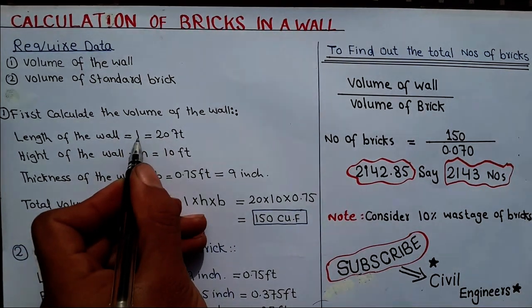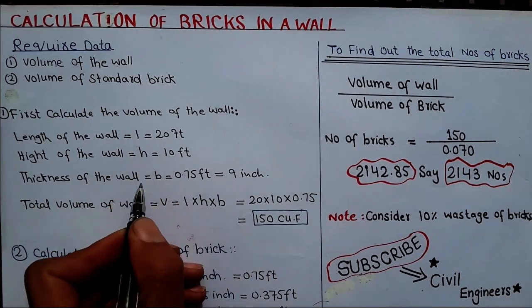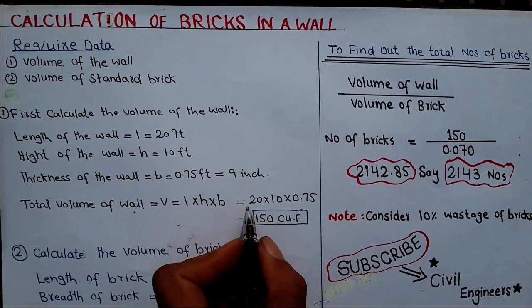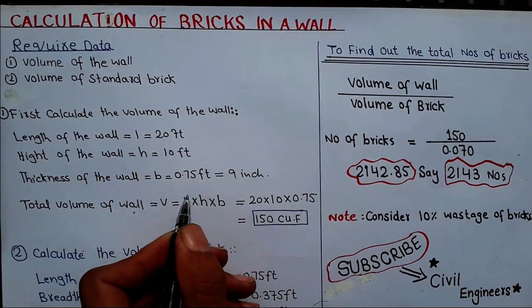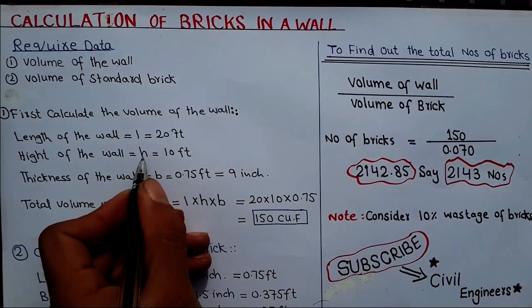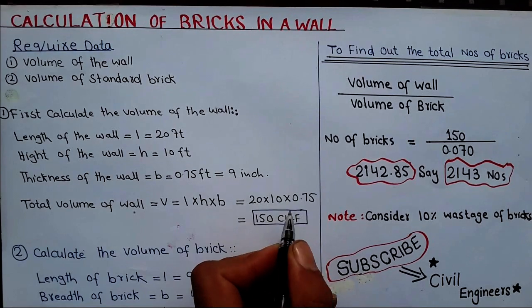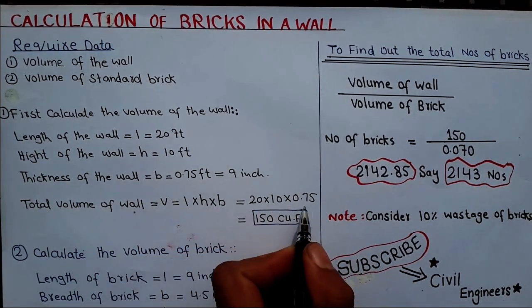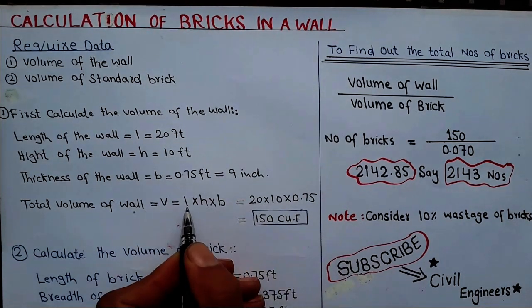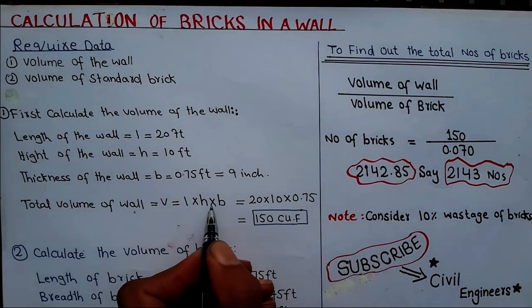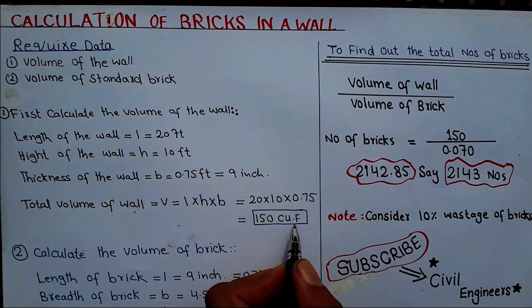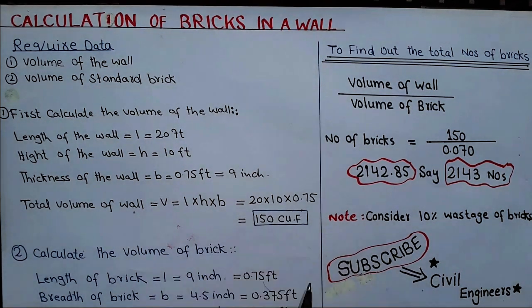V = L × H × B = 20 × 10 × 0.75 feet. When you multiply these three values with each other, it gives you the volume: 150 cubic feet (CFT).